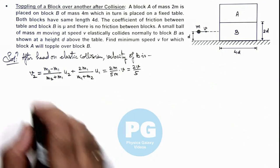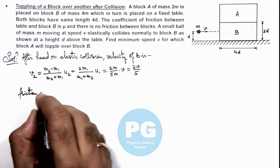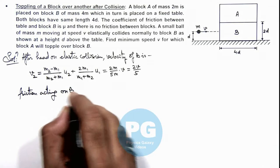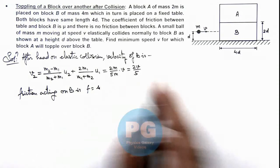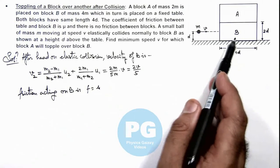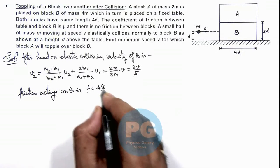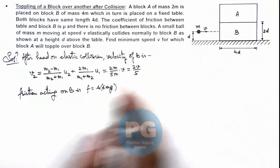And when B moves we can calculate the friction acting on B is the value of friction here is μ times the normal reaction acting on bottom. Total weight here is 6mg so this is μ times 6mg. This is the friction and due to friction B will retard.